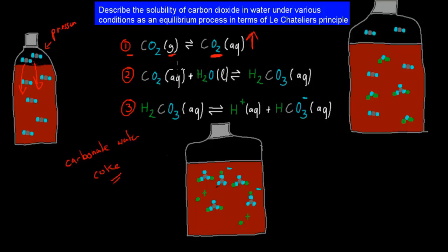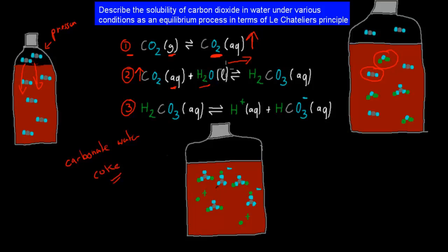The second step is that if we have an increase in dissolved carbon dioxide, that means we have these water molecules and carbon dioxide molecules together. Because of an increase in carbon dioxide molecules, there will be a shift from reactants to products, which means we get an increase in carbonic acid molecules.